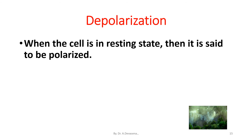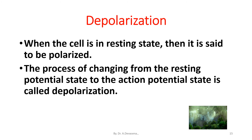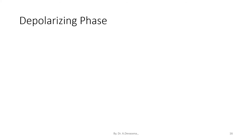Depolarization: when the cell is in the resting state and then becomes depolarized, the process of changing from the resting potential state to the action potential state is called depolarization. If the cell is excited, that is stimulated either electrically or chemically, the excitable cell will enter into the active state.